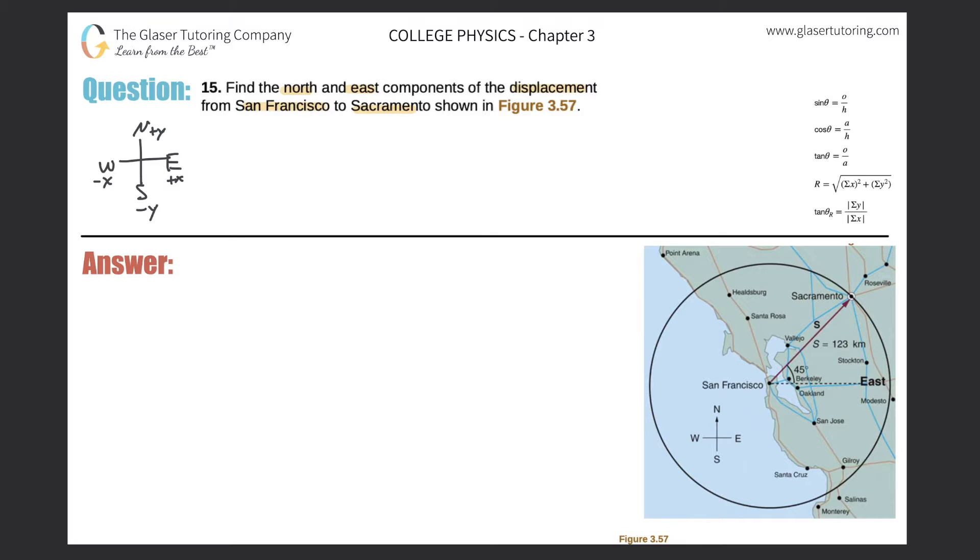Alright, so instead of saying finding the north and east components, I could say find the positive x component and find the - oh I did it again guys, my goodness what's going on? Find the north component, meaning find the positive y component, and the east component would be the positive x.